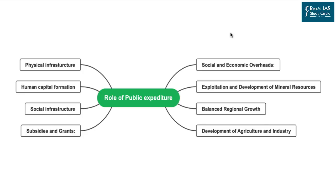Let us now move to the role of public expenditure in a developing country like India. India is a nation where money matters a lot, and money coming from the government side can bring the following benefits. The first is socio-economic overheads: there are certain sectors where the private sector is not ready to invest, the most important being education in the rural sector. Hence, government expenditure is very crucial.